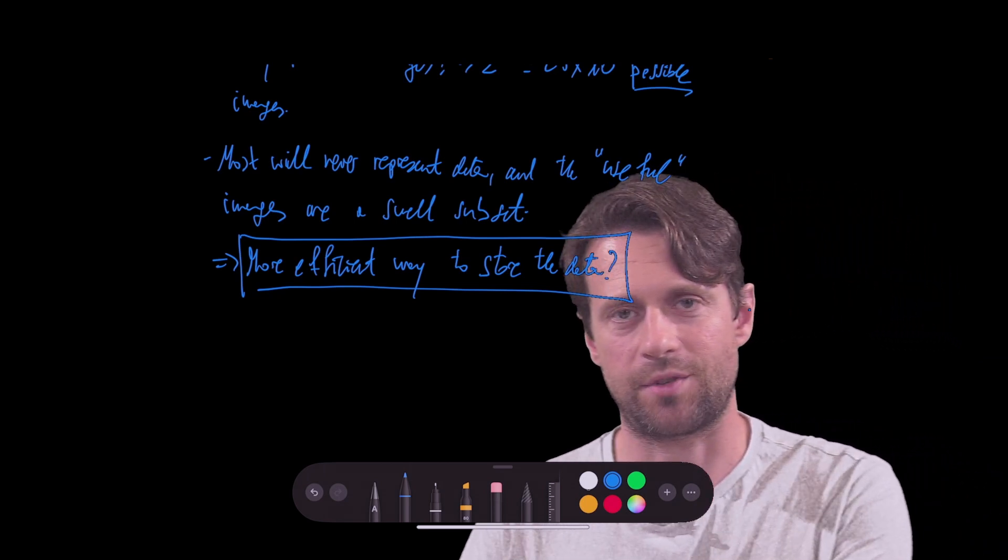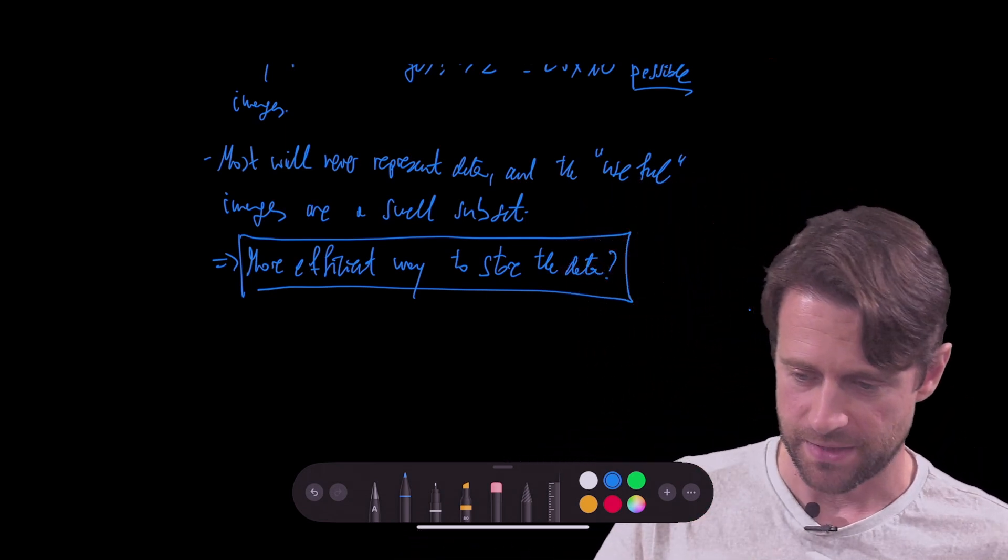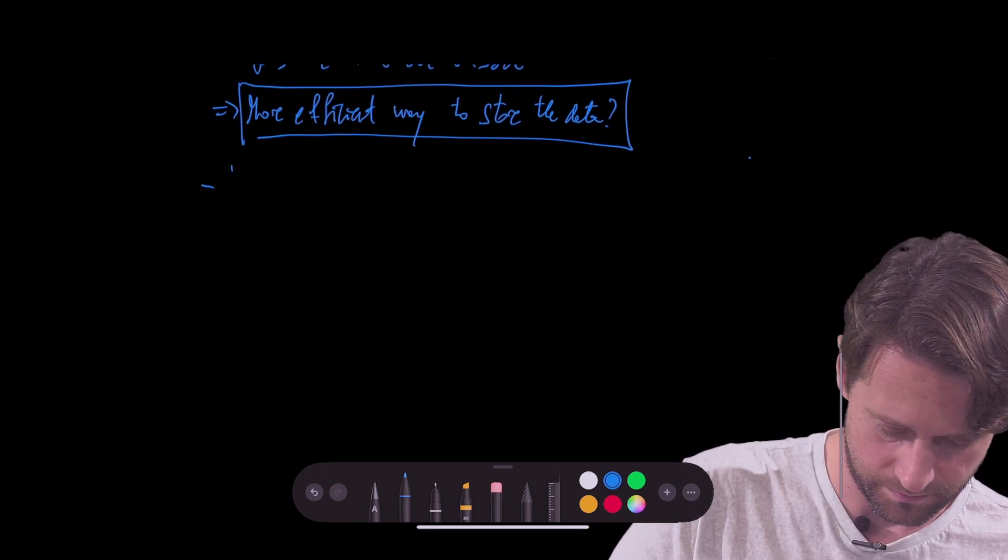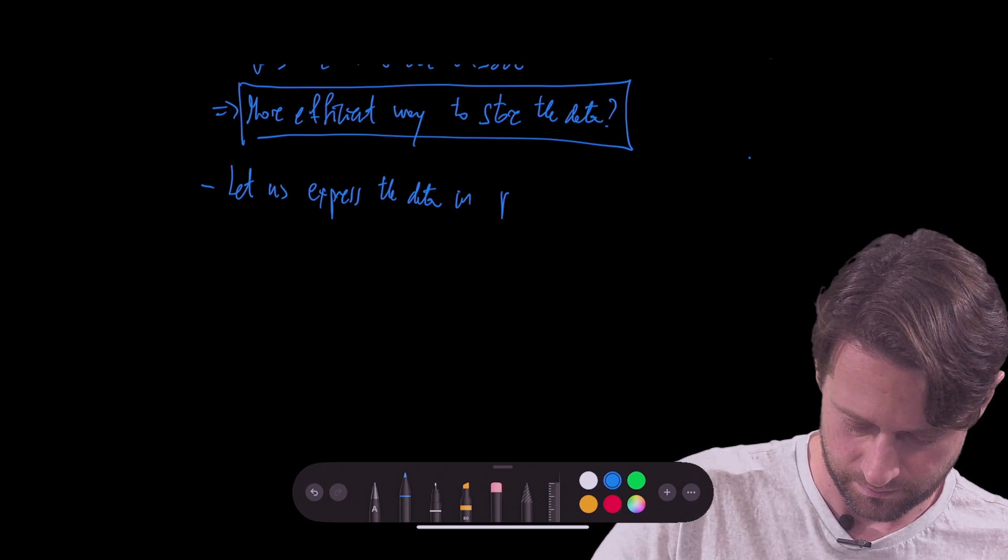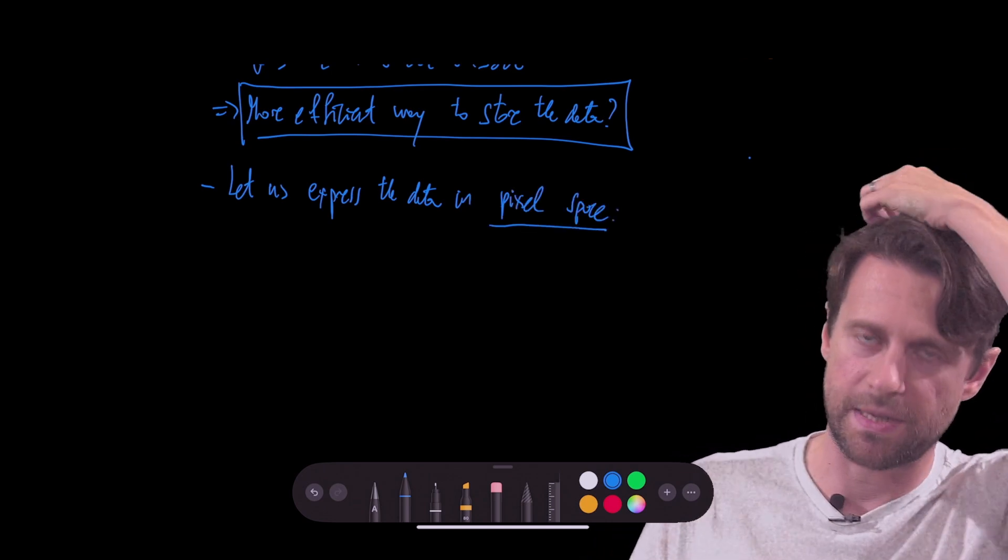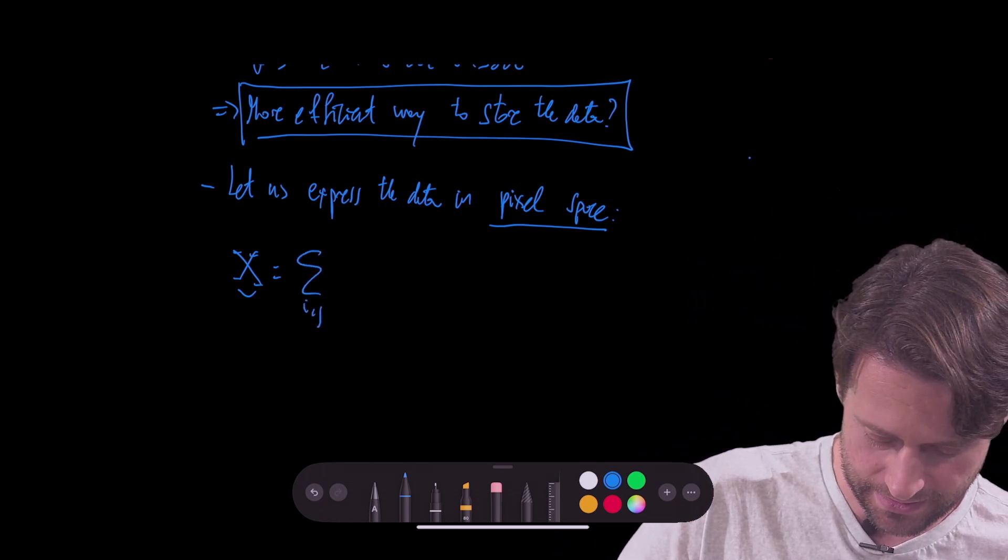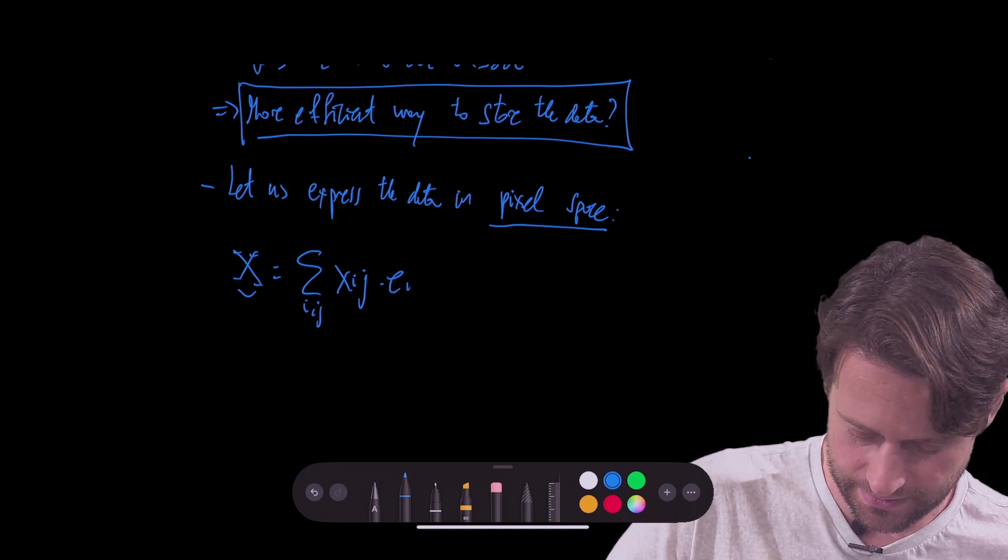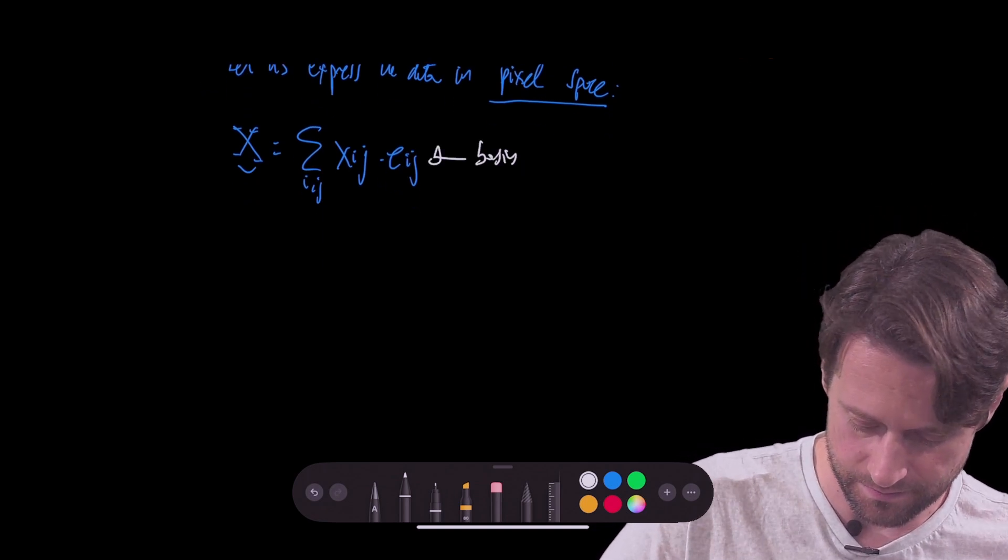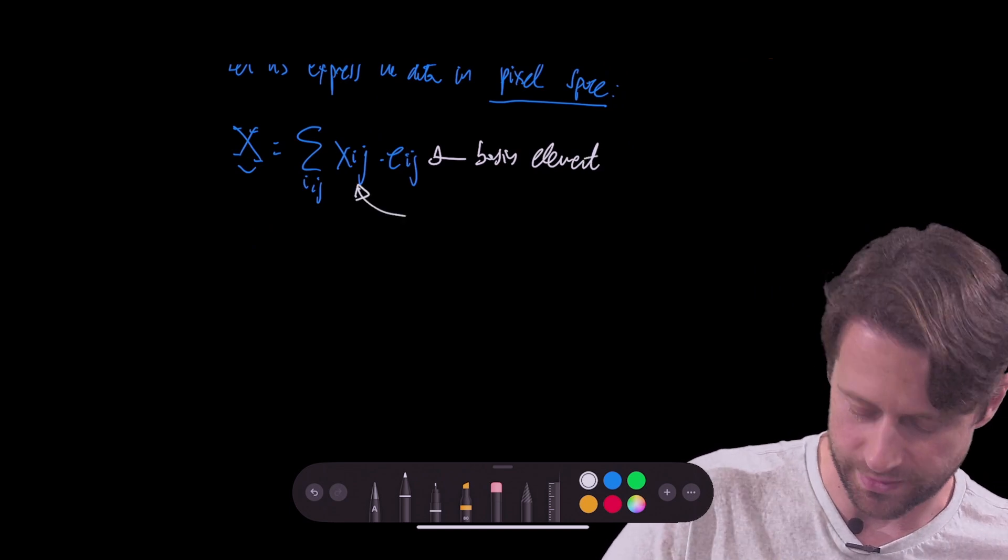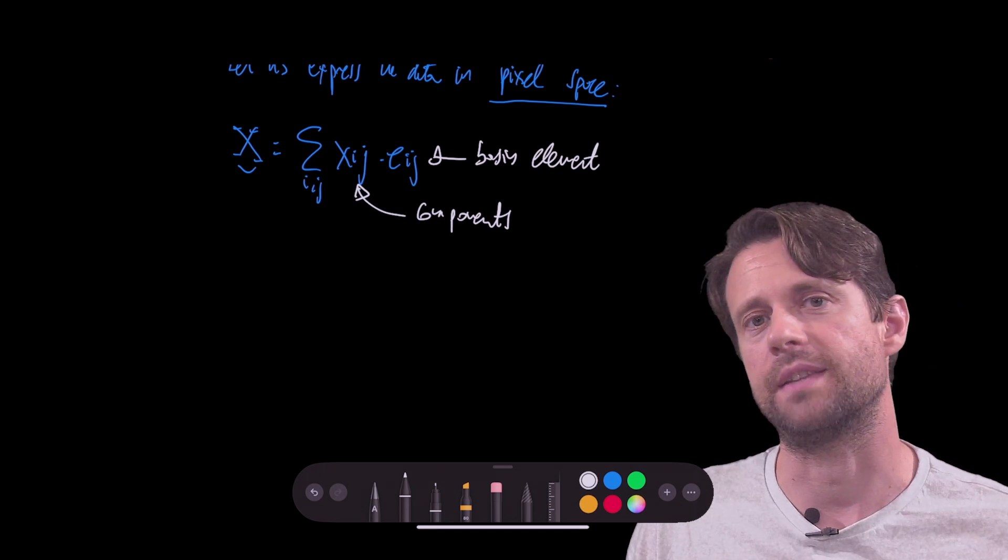Well, that's what we want to answer in this chapter. At the end, let's consider the pixel space of these 20 by 20 possible pixels that we have. So let us express the data in pixel space. Now what does this mean? Now we're going to take our data matrix X, our fantastic capital X. This is going to be the sum in i and j of x_ij times e_ij. And here I want to highlight that these e_ij are the basis elements, and this x would be the components.